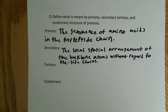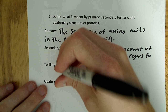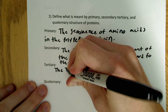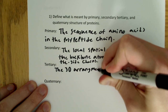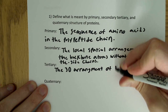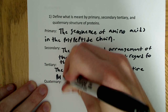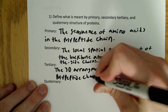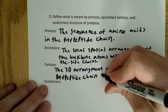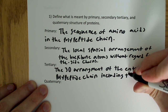What is meant by the tertiary structure of proteins? It's the three-dimensional arrangement of the entire polypeptide chain, including the side chains.